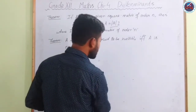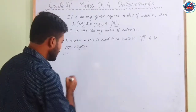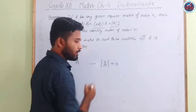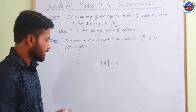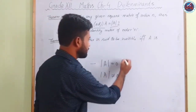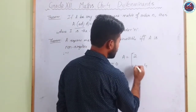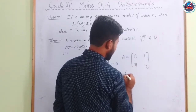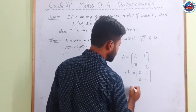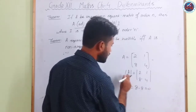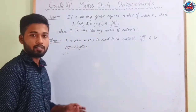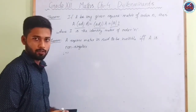Next, singular and non-singular matrices: if the determinant of A is 0, it is called a singular matrix. If the determinant of A is not equal to 0, it is a non-singular matrix. For example, A = [[2,4],[8,1]] has determinant 2×1 − 8×4 = 2 − 32 = 0, so it is a singular matrix.